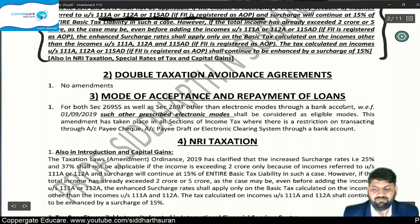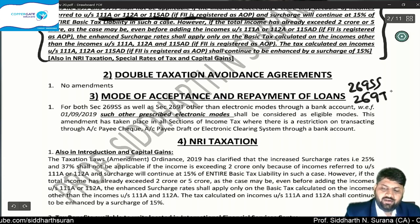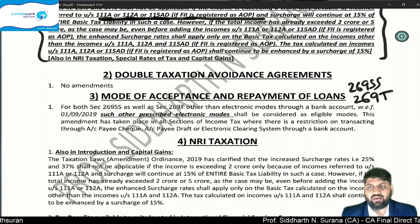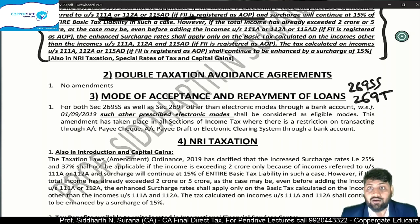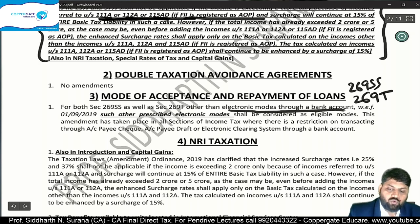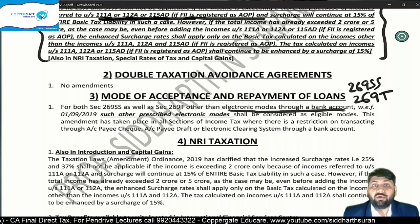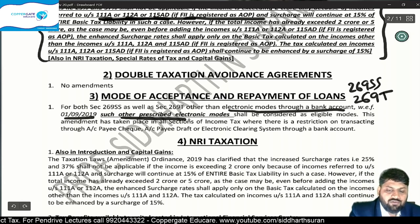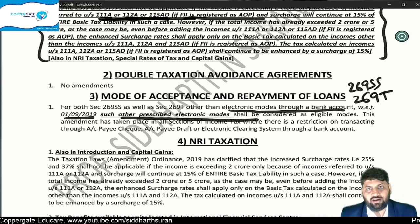Next chapter is Mode of Acceptance and Repayment of Loans. I discuss two sections: Section 269SS for loan acceptance and Section 269T for loan repayment. You can accept and repay loans only through account payee cheque, account payee draft, or electronic clearing system through a bank account. But now, from 1st September 2019, other prescribed electronic modes will also be covered — modes like online payment without bank involvement. For example, Rupay debit card and transactions through BHIM/UPI are prescribed. Private entities like Paytm, Jio Money, Airtel Money cannot be prescribed.